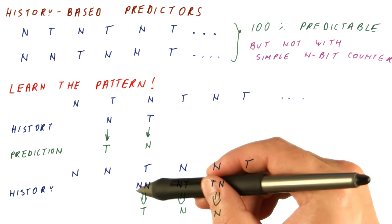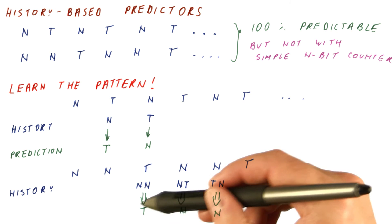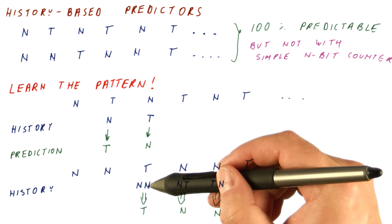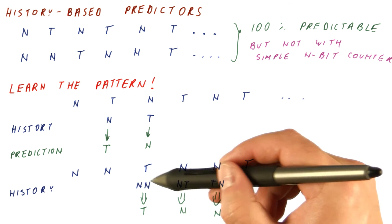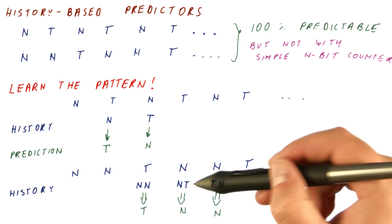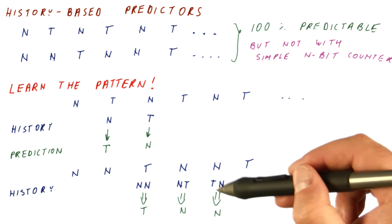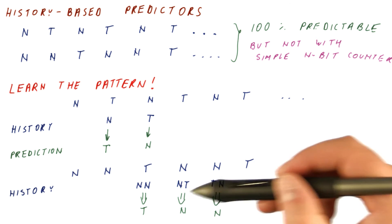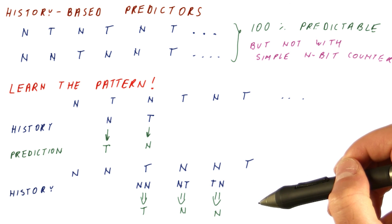So if we consider, for different histories, different predictions, then we will train our predictor so that it, for this history, predicts one outcome. For this history, predicts possibly another outcome. For this history, predicts a different outcome, and so on. And then this becomes a very predictable branch.